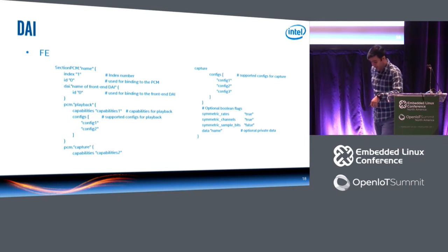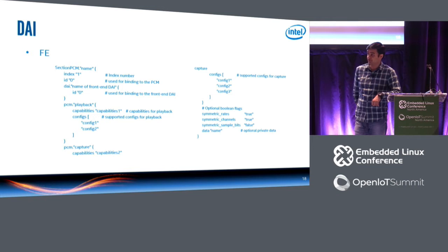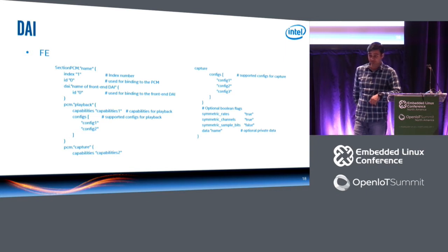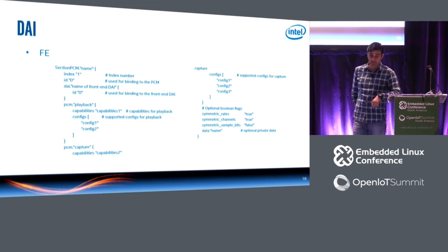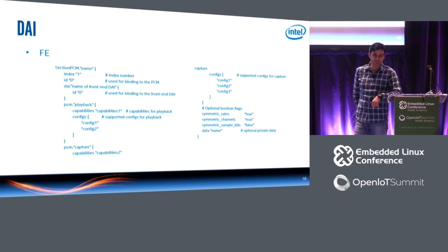The front-end PCM is declared using 'SectionPCM'. The ID is used to bind it to the PCM in the driver. You define the DAI name, and then define playback capabilities and configs it supports — one or multiple configs depending on the use case. Similarly for capture: what capabilities and configurations are required. You can also define whether playback and capture require symmetric rates, channels, or sample bits by setting those flags true or false. Associate private data that your DSP can use.